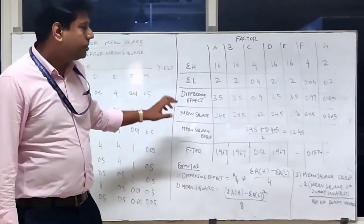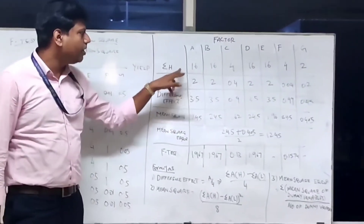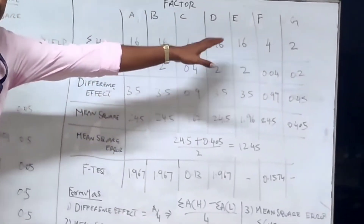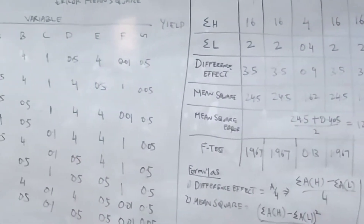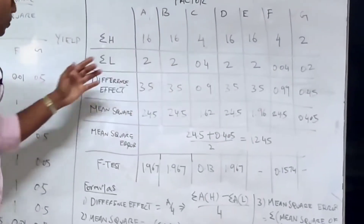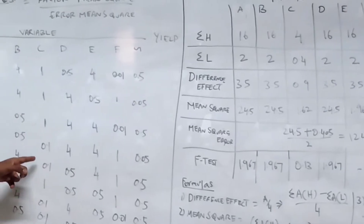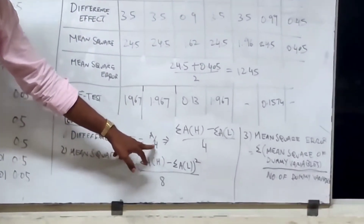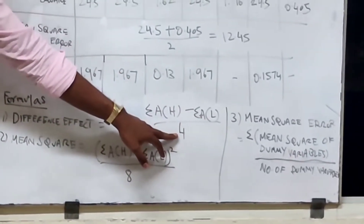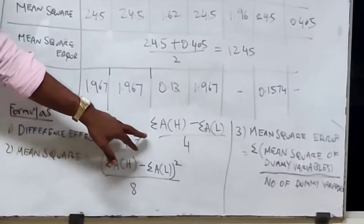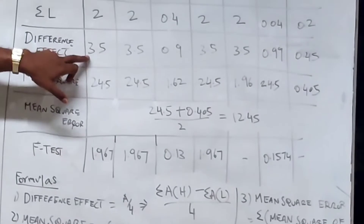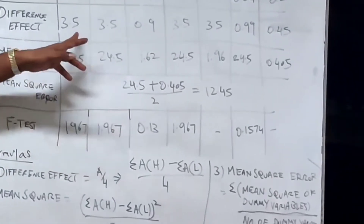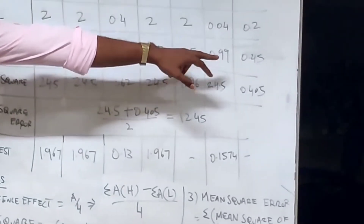The difference effect formula for variable A is: Effect(A) = (sigma AH minus sigma AL) divided by 4. Applying this formula for all variables gives the effect values: A = 3.5, B = 3.5, C = 0.9, D = 3.5, E = 3.5, F = 0.99, and G = 0.45. Then we calculate the mean square, where mean square = (sigma AH minus sigma AL) squared divided by 8, calculated similarly for B, C, D, E, F, and G.